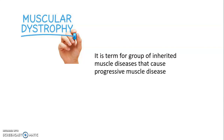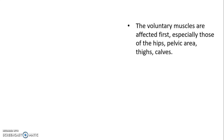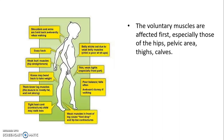Now coming to muscular dystrophy, a term for a group of inherited muscle diseases that cause progressive muscle weakness. Duchenne muscular dystrophy (DMD) is X-linked recessive, usually passed from the mother's side. Males are affected more than females. There are mutations in the gene for dystrophin. Symptoms begin at 4 years of age and worsen quickly, and most children are unable to walk by 12 years of age.